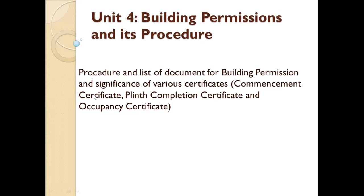After getting the completion certificate, you have to again apply for the occupancy certificate. After completion of construction work, your application should reach the concerned local authority before 30 days. After visiting the site and getting clearances from various departments, the authority will provide the occupancy certificate, and then you can occupy that building for staying or any other purpose. This is the step-by-step procedure overview — commencement certificate, plinth completion certificate, completion certificate, and occupancy certificate.